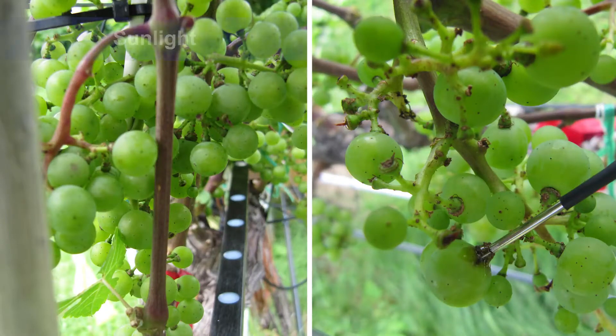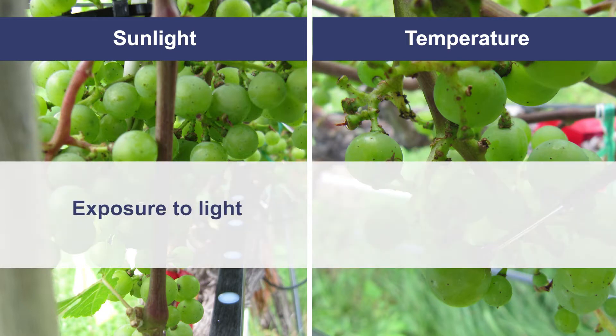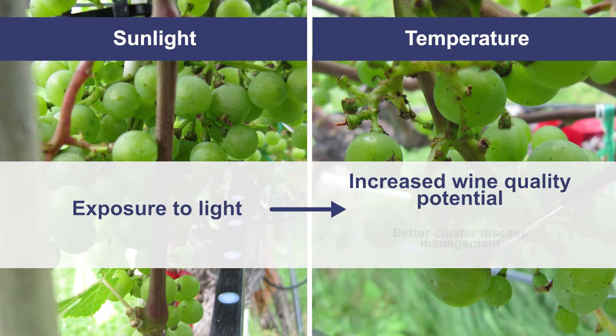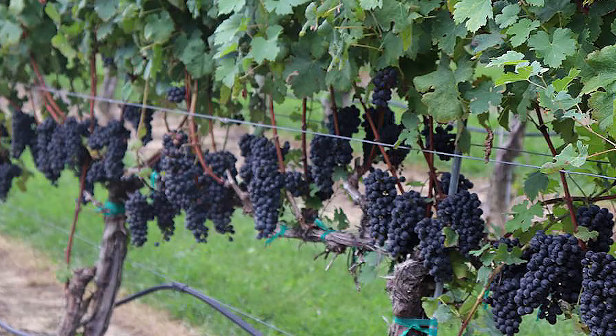In wine grape vineyards, fruit zone leaf removal is a critical canopy management practice that increases sunlight and temperature of grape clusters, which are measured by these sensors. Cluster exposure to ambient light typically leads to increased wine quality potential and better cluster fungal disease management, especially in humid grape growing regions with high disease pressure like Pennsylvania.